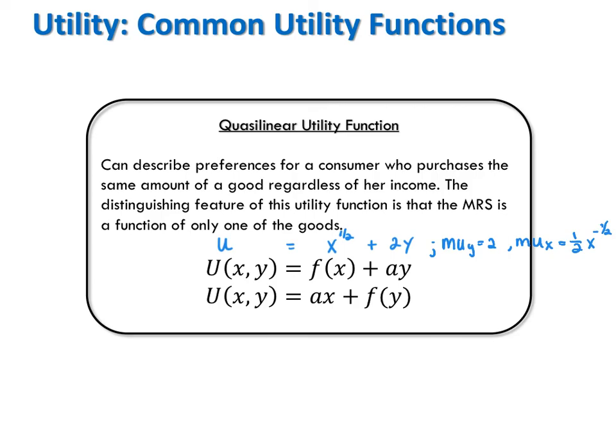On the other hand, if we have a utility function where it's a-x plus some function of y, for example, U equals two-x plus the log of y, now it's MU-x that's a constant, and MU-y that varies with y. All Quasi-Linear Utility functions have one good with a constant marginal utility and the other good with a non-constant marginal utility. In other words, one of the goods enters the function linearly, whereas the other doesn't. The function is half-linear and half-not, or quasi-linear.